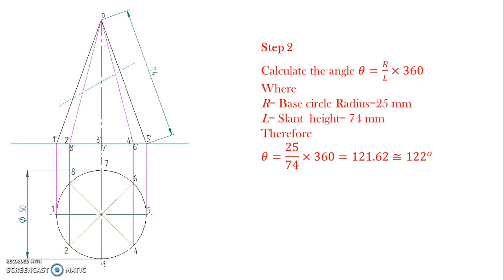The second step is calculate the angle theta by using formula R upon L into 360, where this R is the base circle radius which is 25 mm here, and L is the slant height or length of generator which is 74 mm.